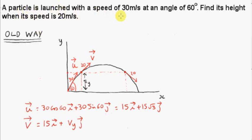A particle is launched with a speed of 30 meters per second at an angle of 60 degrees. Find its height when its speed is 20 meters per second. We are going to do this problem in two ways: the first way is the old way, which we covered in the projectile motion section, and the second way will use conservation of energy.